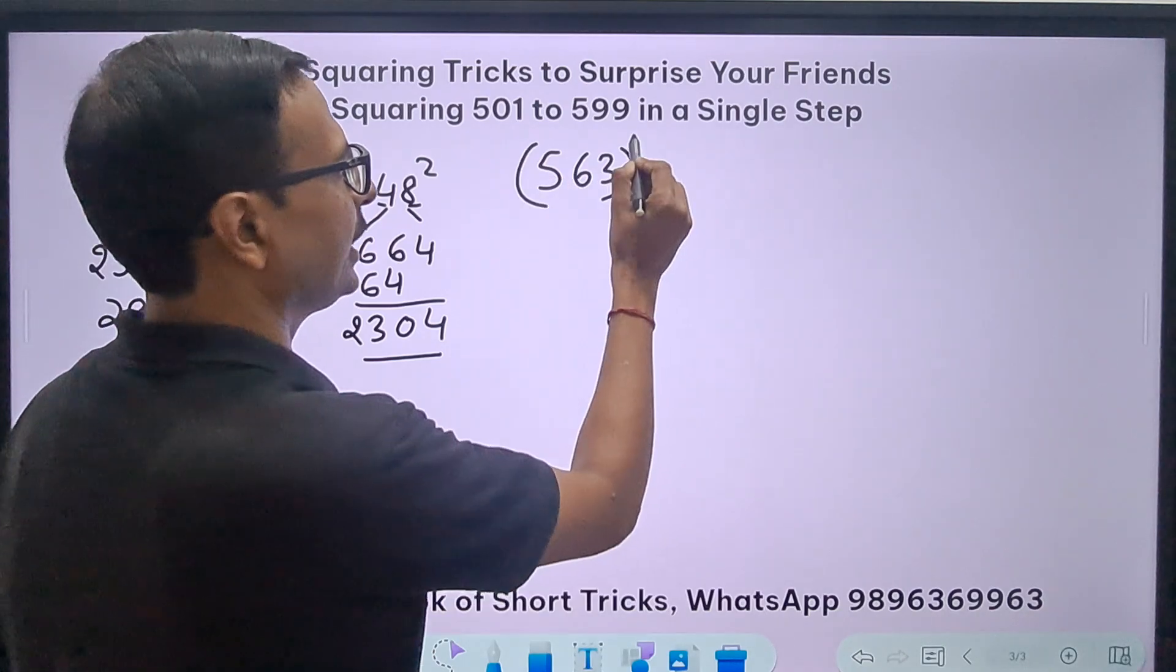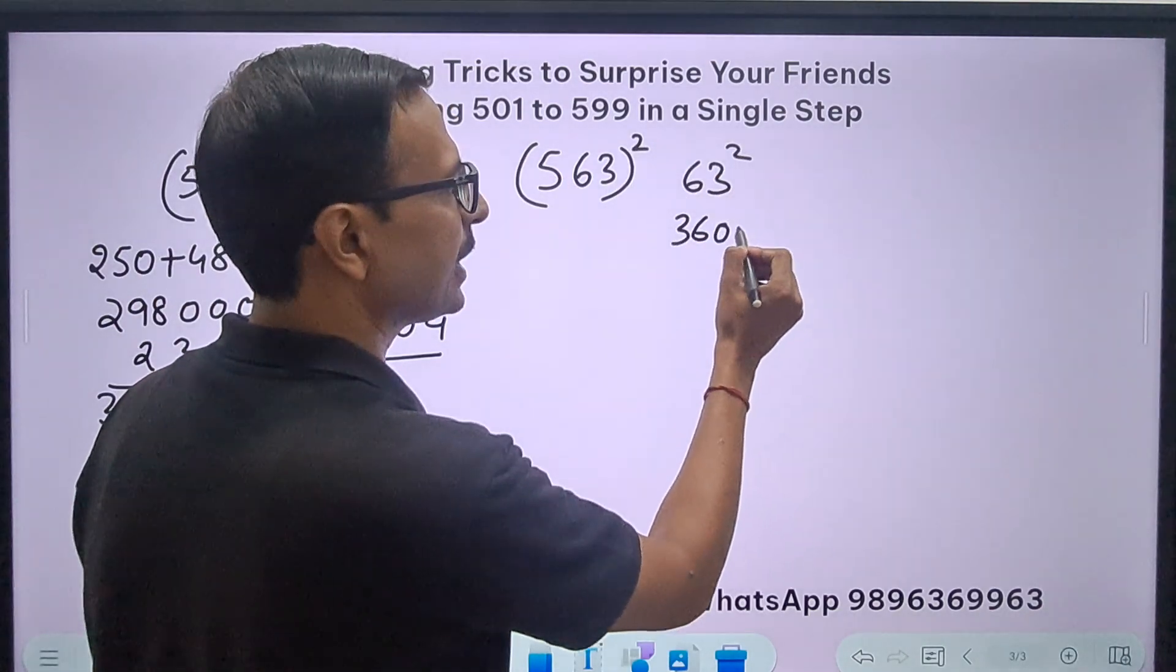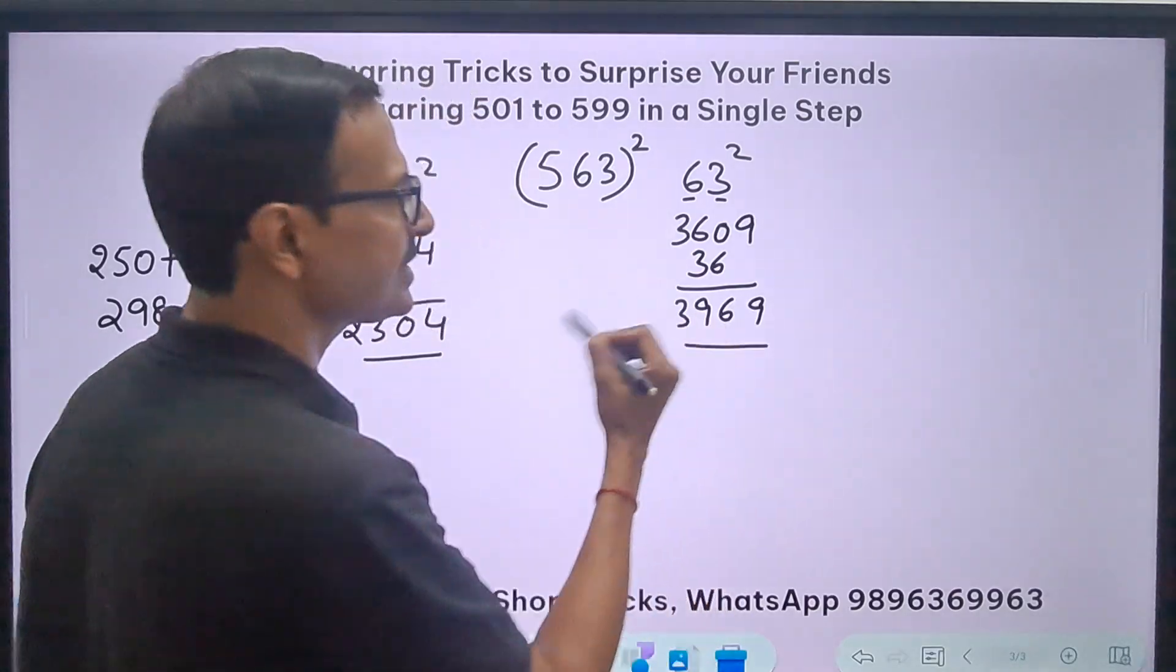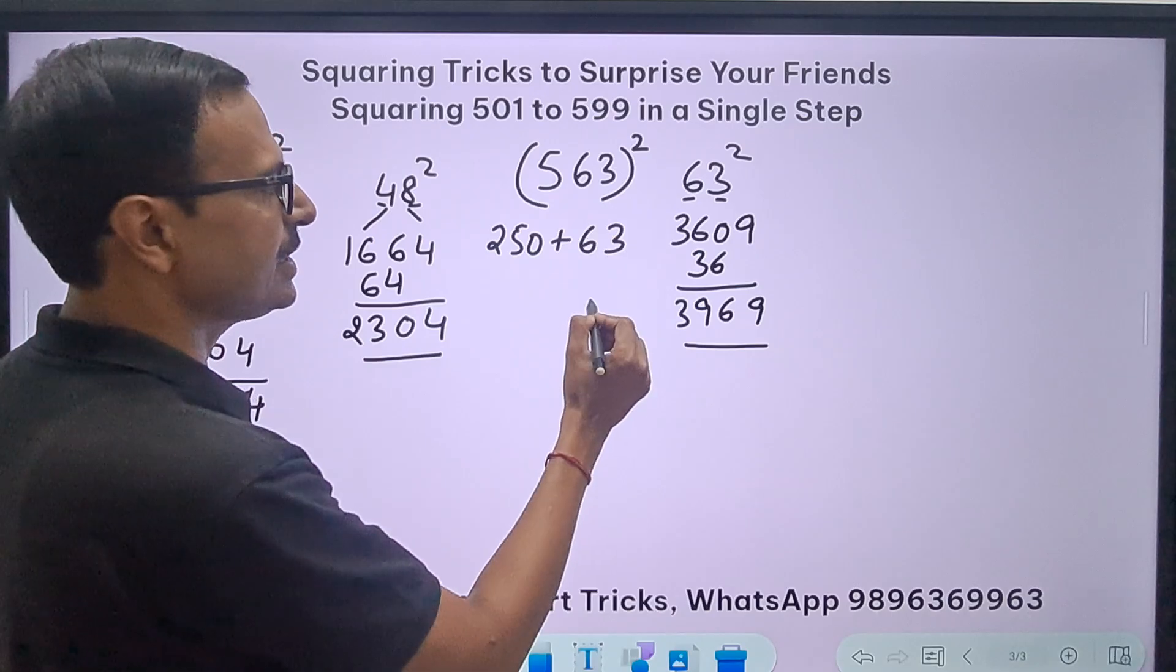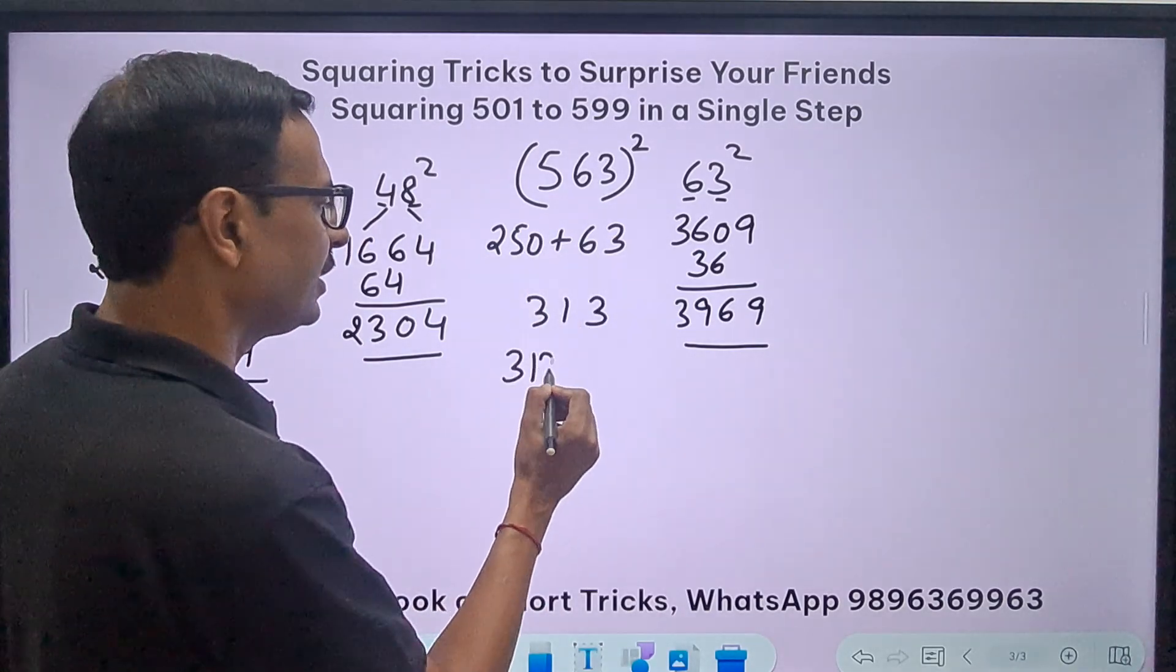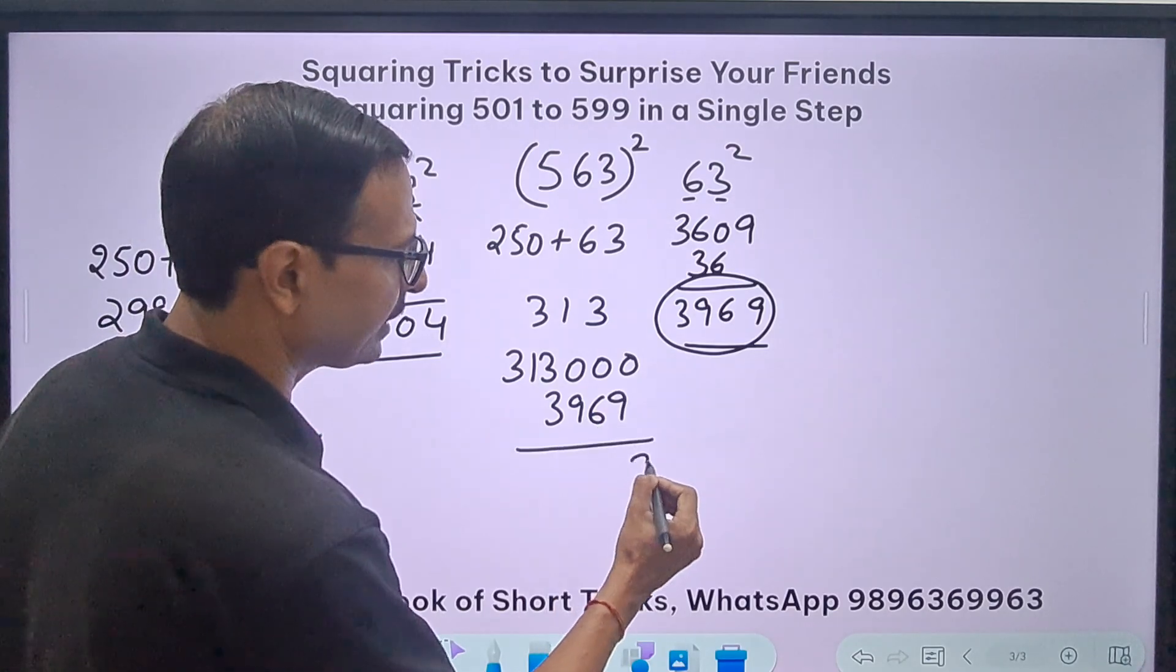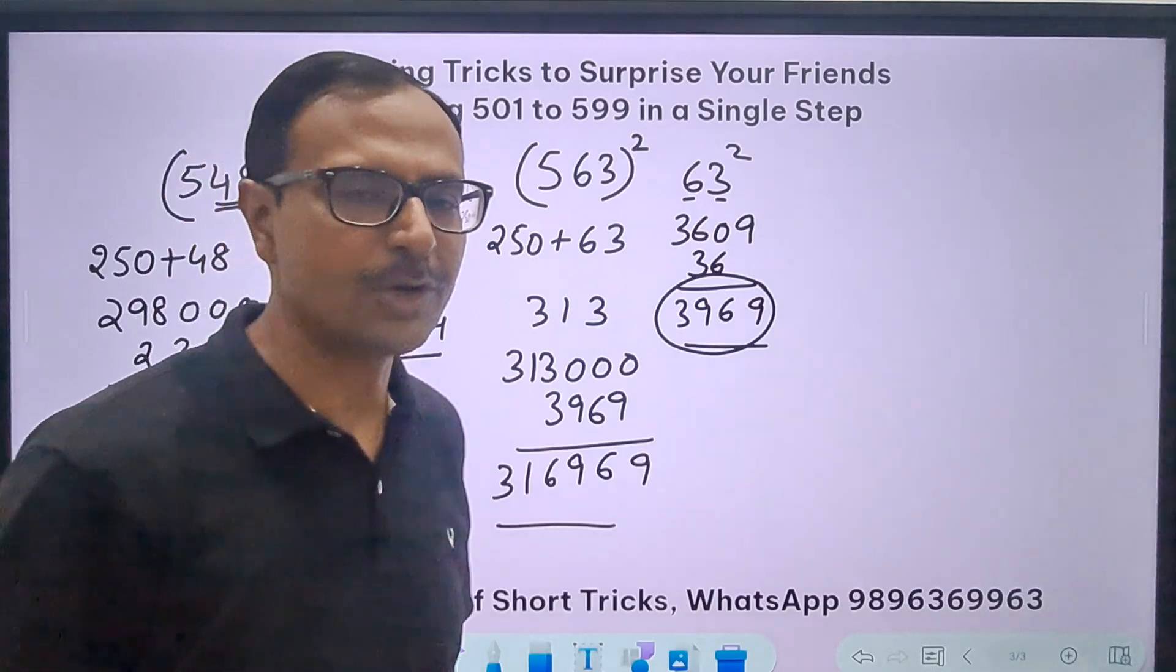563 square. I know I have to do 63 square. 6 square is 36, 3 square is 9, so I'll write 09. 6 times 3 is 18, double is 36. So 3969. 250 plus 63 is 313, right? And 313 is to be suffixed with three zeros. Then I'll add 3969 to the result. I'll get 316969.